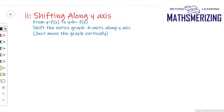The second transformation is shifting along the y-axis. Suppose I'm given the graph of y equals f(x) and I have to draw the graph of y + b equals f(x). All I need to do is shift the entire graph minus b units along the y-axis, moving the graph vertically.